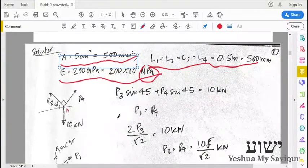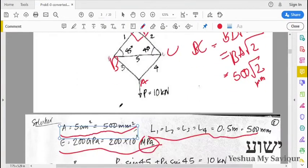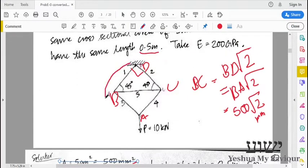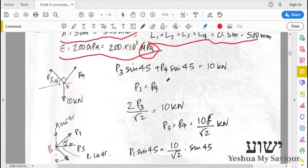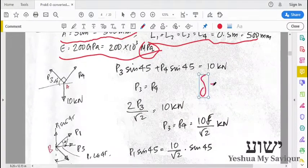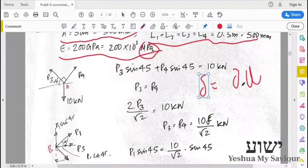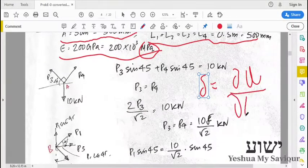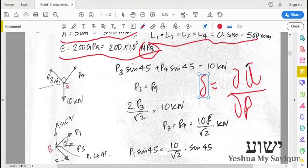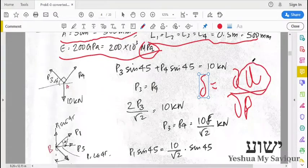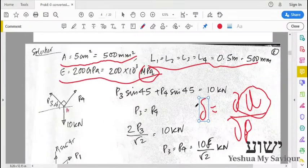To find the strain energy, we can use different methods. I'm going to use Castigliano's first theorem, which states that delta is equal to ∂U/∂P. For that we have to find U, the strain energy.